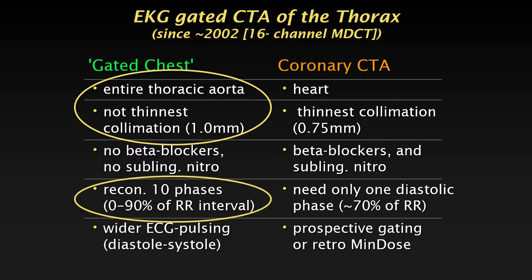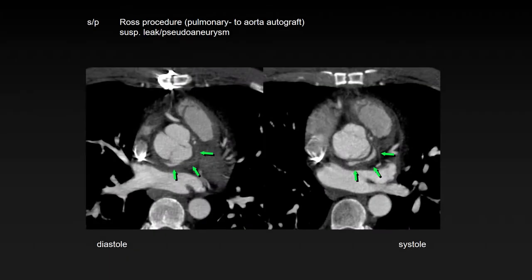For a gated chest, we always use at least 10 phases of reconstruction, like 0 to 90%, whereas for coronary CT you don't necessarily need this. In coronary CT, if you have one good still phase, typically in mid-diastole at 70% of the R-R interval, that's enough. The reason we want 10 phases is that some findings we expect to see are usually visible in only one phase, and sometimes the dynamic information is also important.